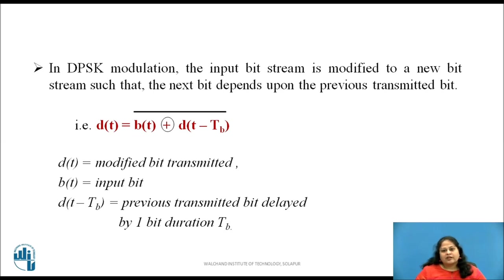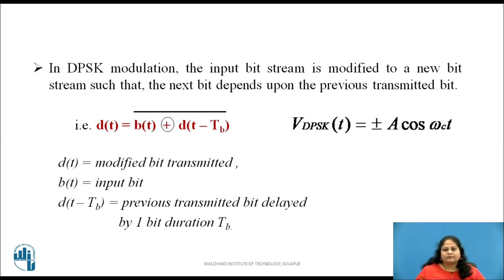This encoding is expressed in an equation form as shown. Here, the modified bit D(t) is obtained by XNORing input bit B(t) with the previous transmitted bit D(t − tb), which is obtained by delaying the previous transmitted bit by 1 bit duration tb. To this encoded bit stream, PSK is applied.